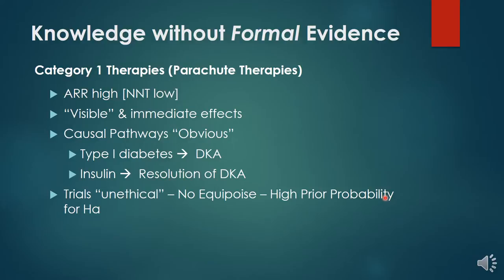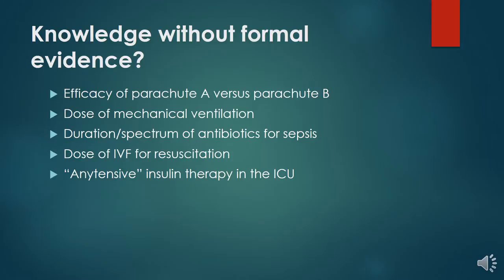In these cases the absolute risk reduction is high, there are visible and immediate effects, and the causal pathways are obvious. Lack of insulin leads to DKA; provision of insulin leads to resolution of DKA. Trials are unethical because there is no equipoise — the prior probability that these therapies are efficacious is very high.